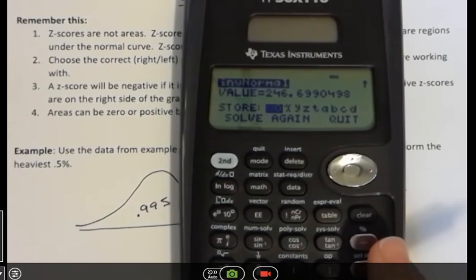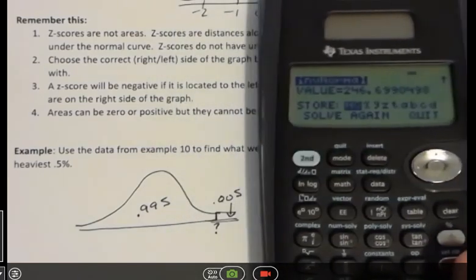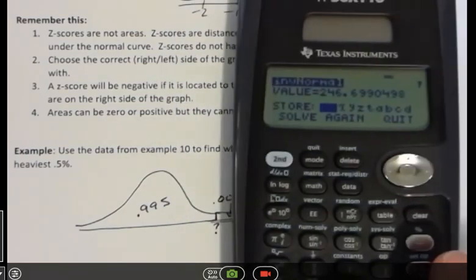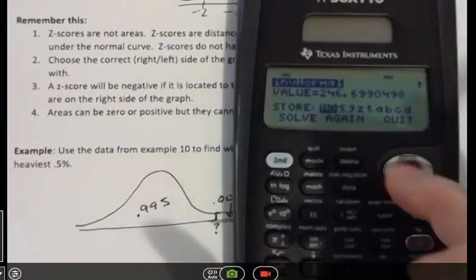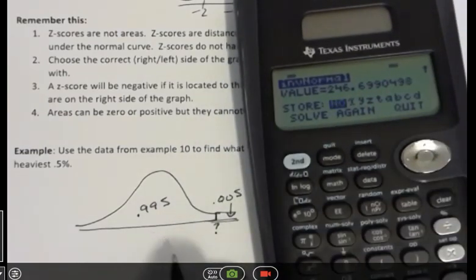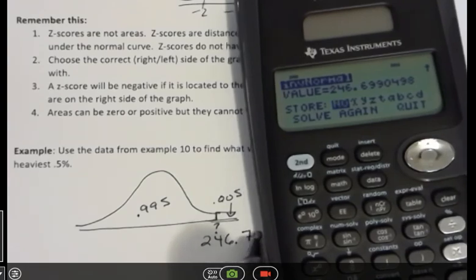Did I do that wrong? It's everything to the left of that value, which is 0.995. Oh, that's right. 246. So this is 246.70, right?